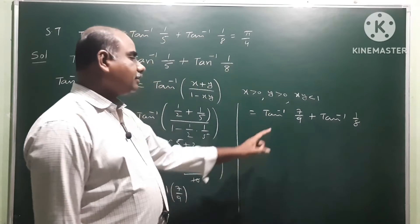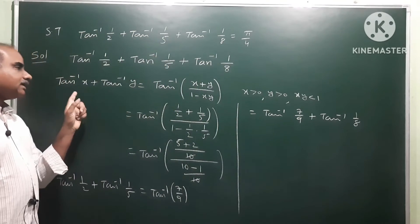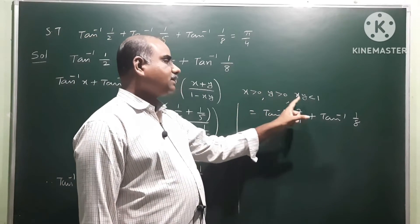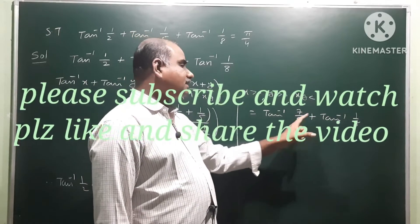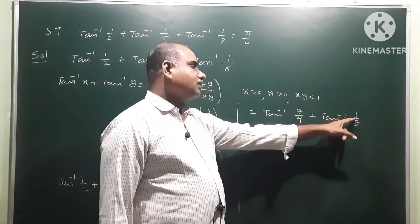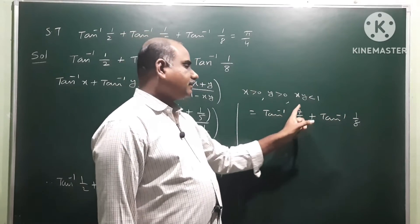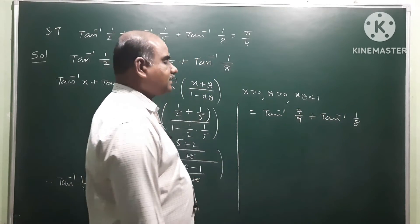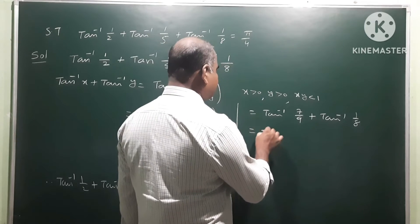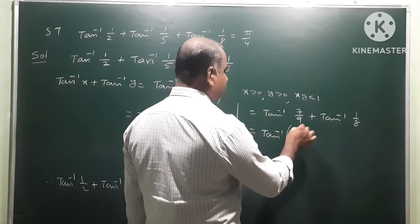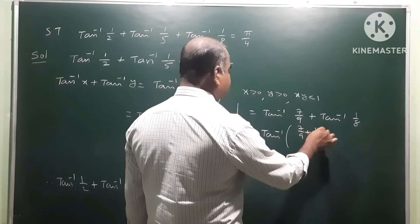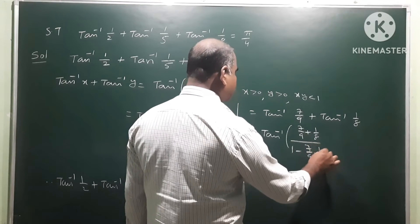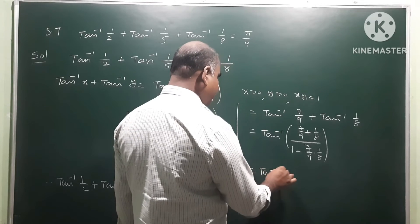Here x is 7/9 and y is 1/8, both are greater than 0, so we apply the same formula once again: tan inverse of (x plus y) divided by (1 minus x times y).